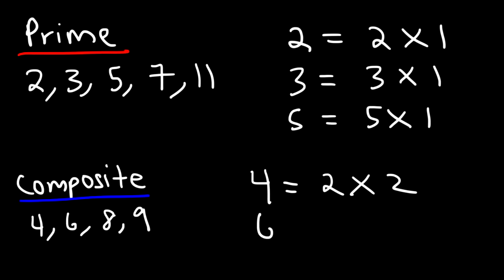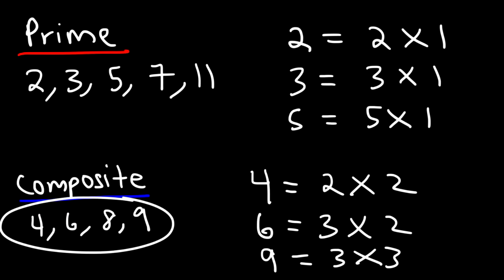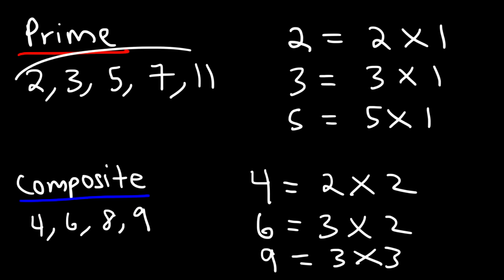Looking at 6, it is composite because we can find two whole numbers that multiply to 6 that are not 1 — those two whole numbers are 3 and 2. In the case of 9, 3 times 3 is 9. So that's why these are composite numbers and those others are prime numbers.